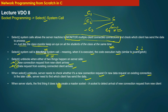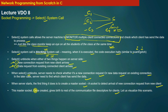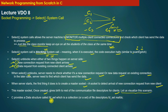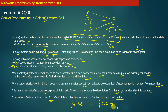When the server starts, the first thing it does is create a master socket to detect the arrival of new connection requests. This master socket gives birth to the rest of the communication file descriptors for clients. C provides a predefined data structure called fd_set, which is a collection of file descriptors. You can define a variable, for example read_fds, of data type fd_set. Since file descriptors are simple integers, fd_set is simply a collection of file descriptors the server is maintaining. We will discuss fd_set further when implementing the TCP server.